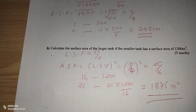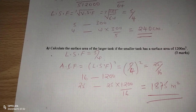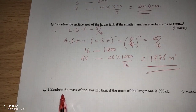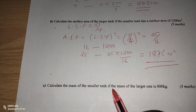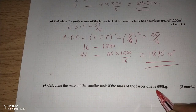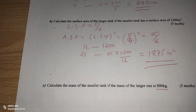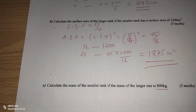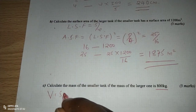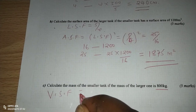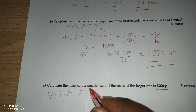Therefore 1,875 square meters is the surface area of the bigger tank. Finally, we are asked to calculate the mass of the smaller tank, given that the mass of the larger tank is 800 kilograms. For mass, we return to the volume scale factor. Therefore we go back to the volume scale factor, which was the first quantity we calculated.